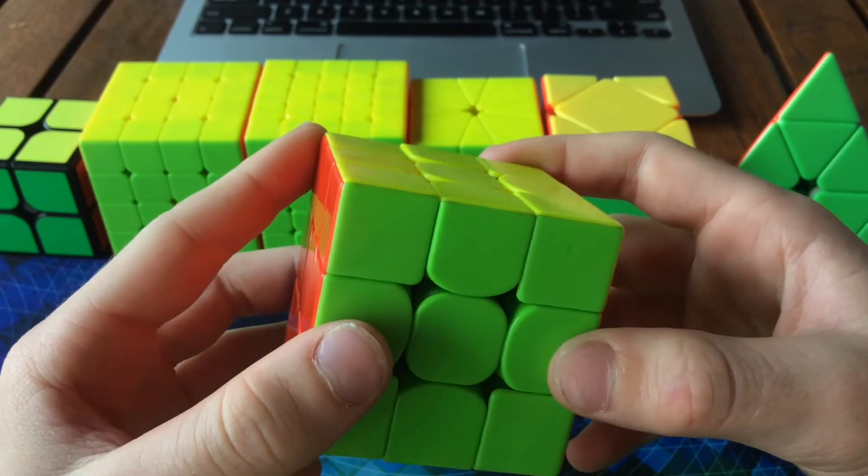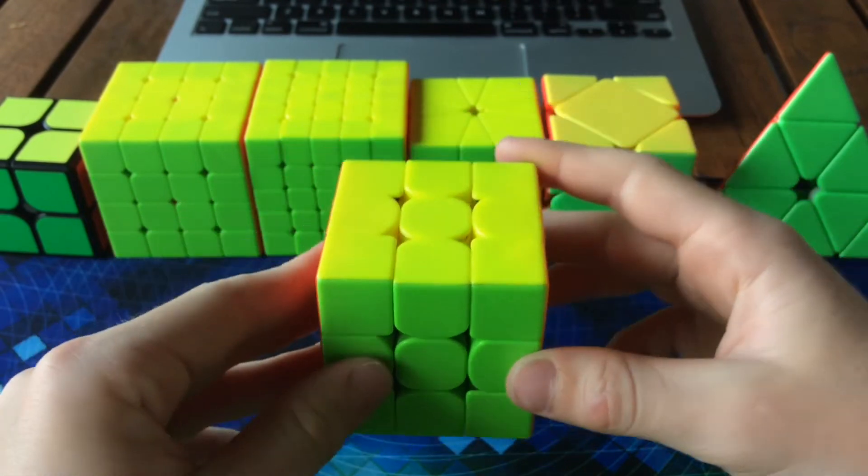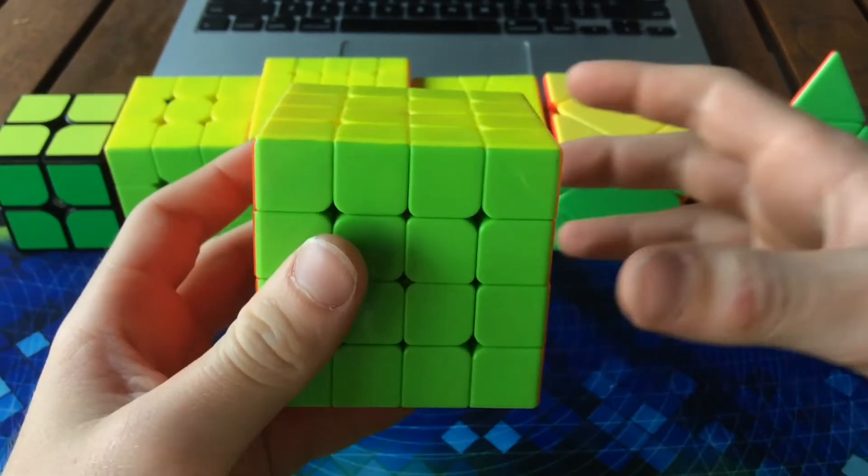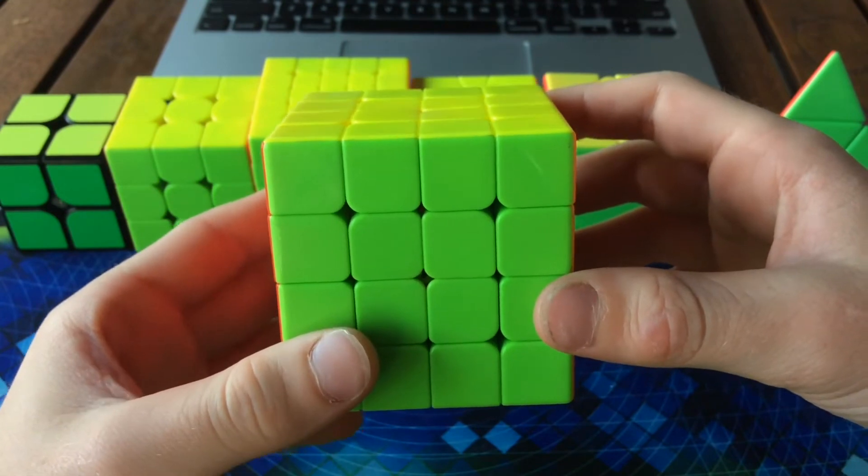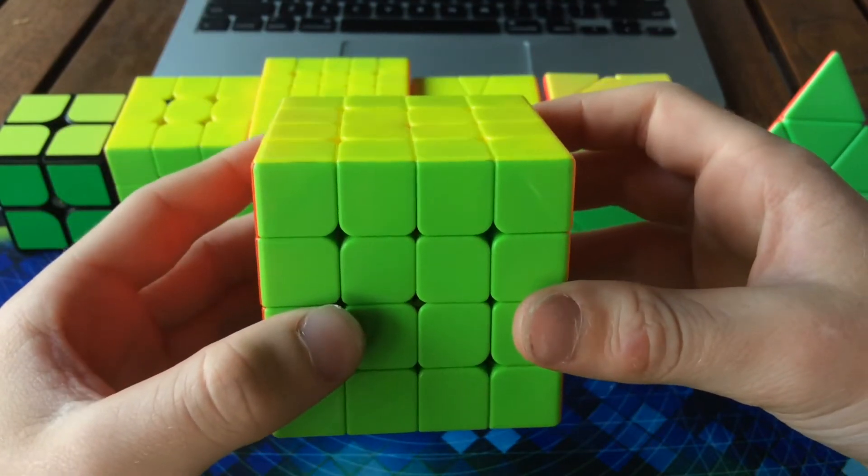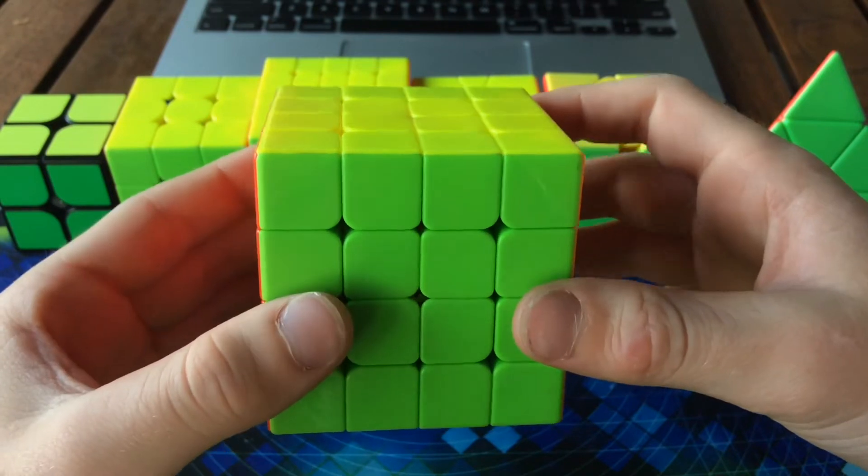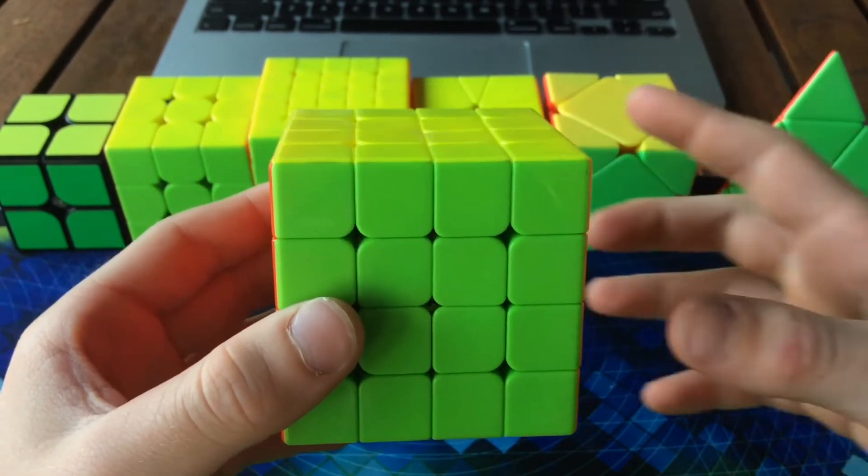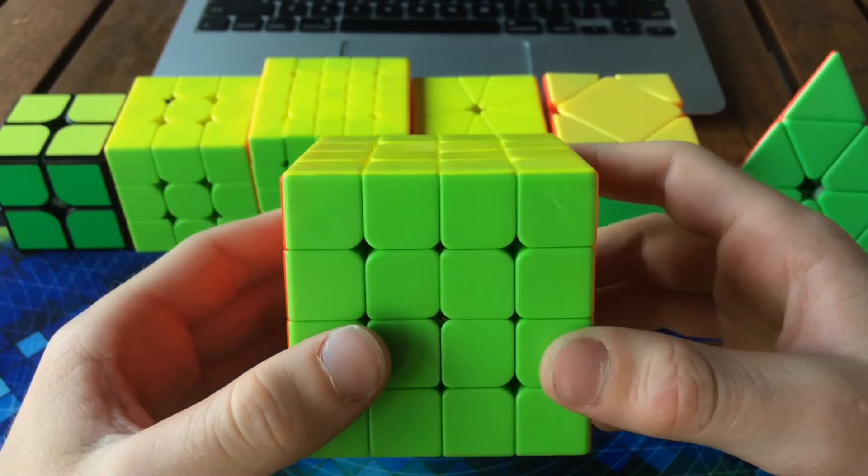For four by four, I'm gonna be using the Angstrom Wuque M. I've made a review on this cube, so you can check that out up in the cards.